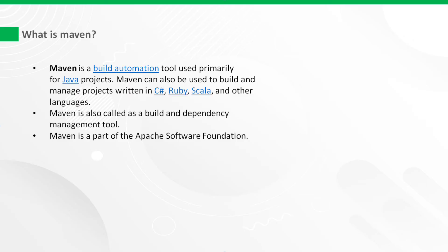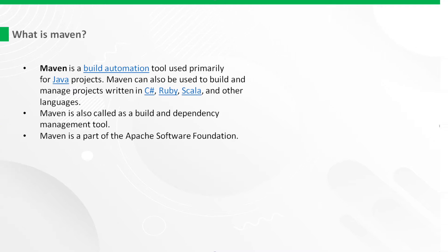What is Maven? Maven is a build automation tool used primarily for Java projects. Maven can also be used to build and manage projects written in C#, Ruby, Scala, and other languages. Maven is also called a build and dependency management tool, and it is maintained by Apache Software Foundation.